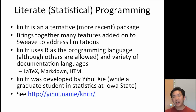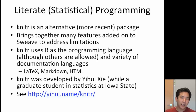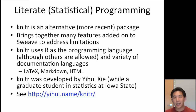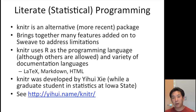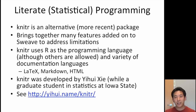One of the alternatives that has come up in recent times is something called Knitr. The Knitr package for R takes a lot of these ideas of literate programming, updates them, and improves upon them with many added features. Knitr still uses R as its programming language but allows you to mix in other programming languages. You can use a variety of documentation languages — LaTeX, Markdown, or HTML. Knitr was developed by Yihui Xie while he was a graduate student at Iowa State, and it has become a very popular package for doing literate statistical programs.